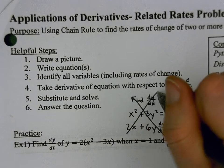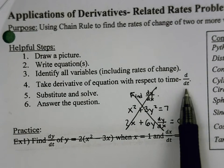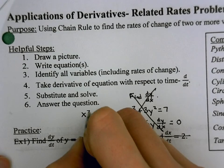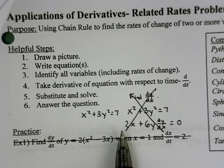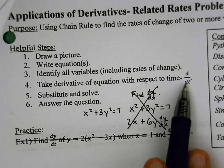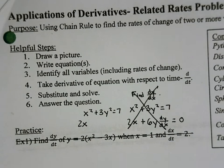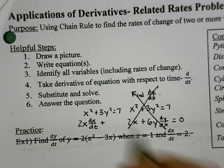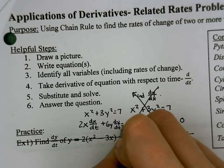That was last semester. With related rates, we're still taking derivatives, but now we're taking our derivative with respect to time, with respect to t. Which means that if it's not a t, you have to acknowledge that fact. With the same equation x² + 3y² = 7, the derivative of x² is 2x — but that's not a t — so we tack on dx/dt. And 3y² gives 6y — that's not a t — so we tack on dy/dt. Then the derivative of seven is zero.